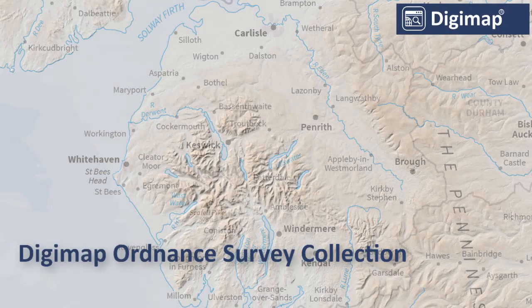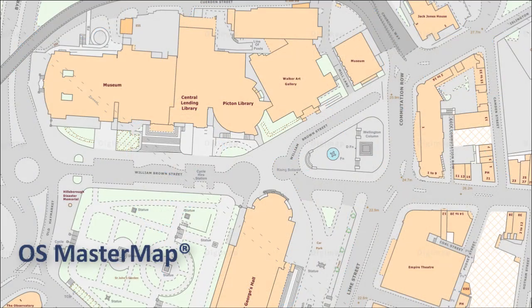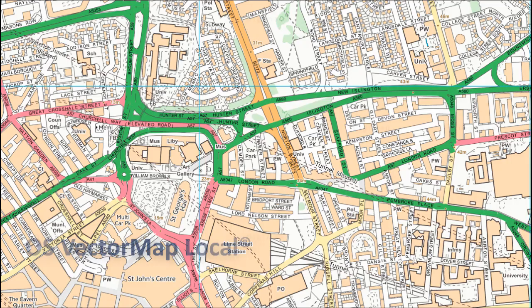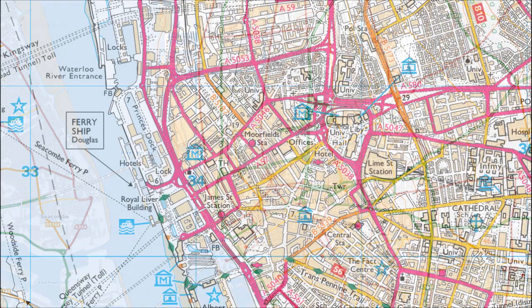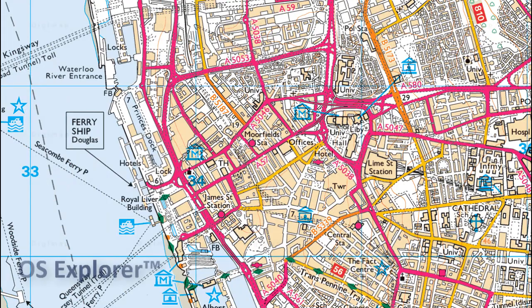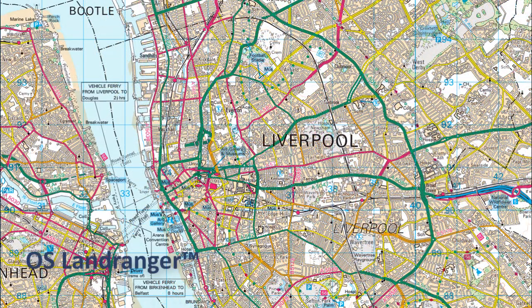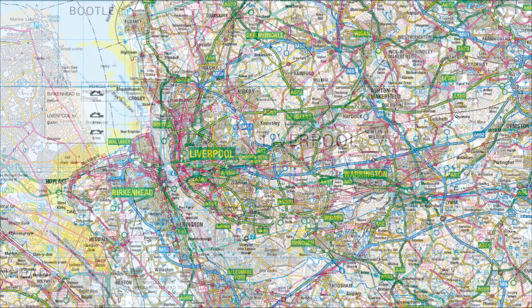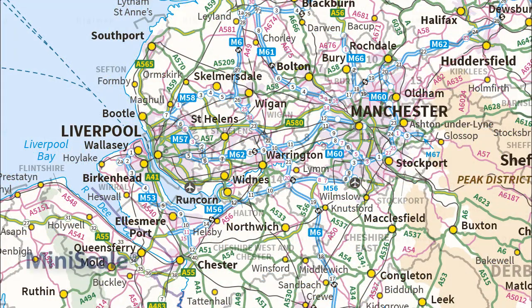With our Ordnance Survey collection, you have access to the highest quality mapping data available for the UK. Our topographic map data ranges from detailed OS MasterMap to local mapping, district maps, digital versions of OS Explorer and OS Landranger maps, plus road atlas and regional mapping.